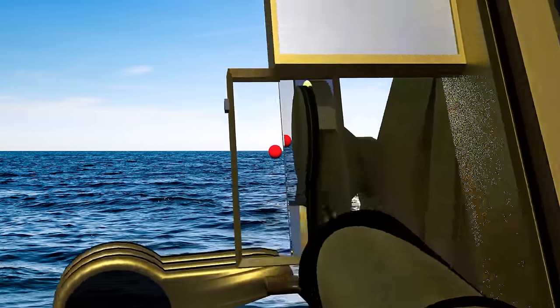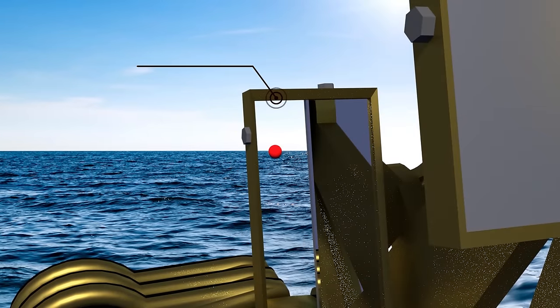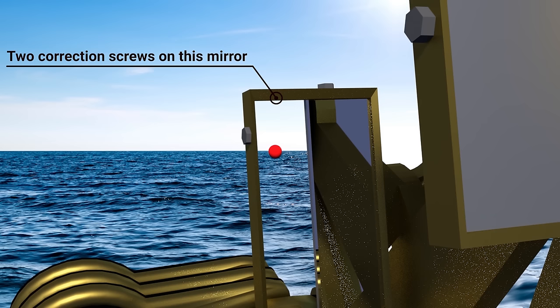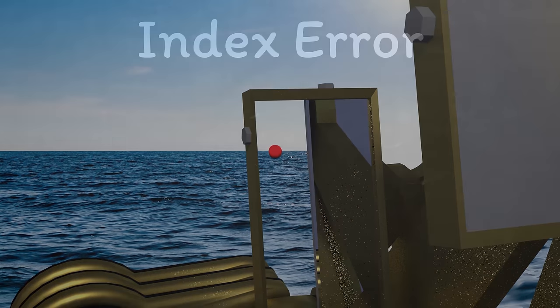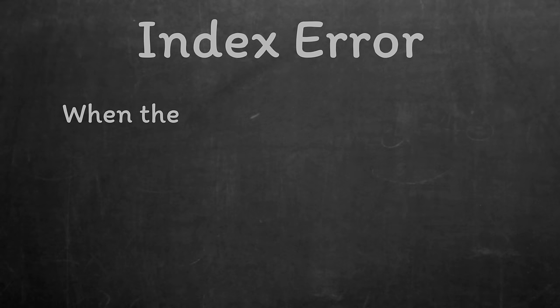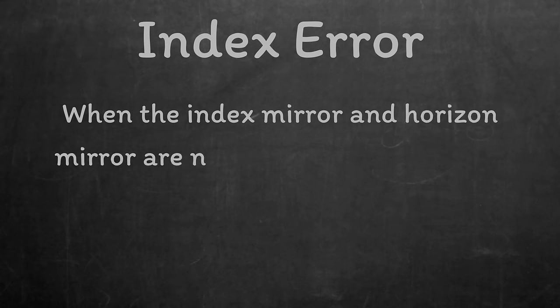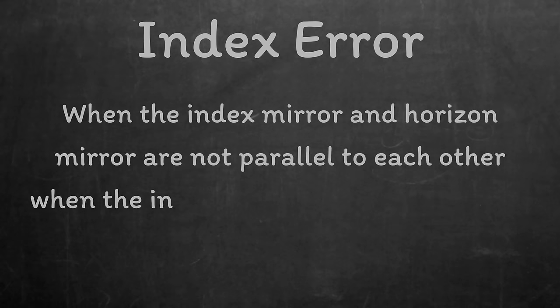You'll notice the correction screws on the horizon mirror are not the same as those on the index mirror. The screws on the horizon mirror actually correct for both side error and index error. We're going to need to correct for both at the same time. So what's index error then?